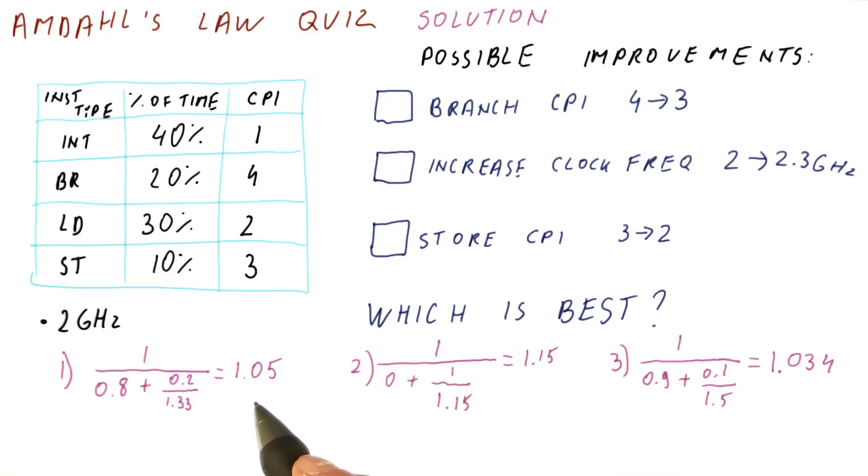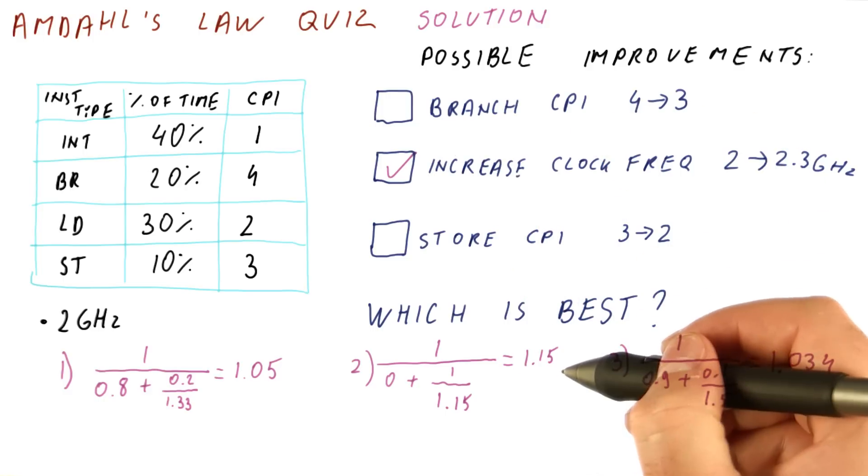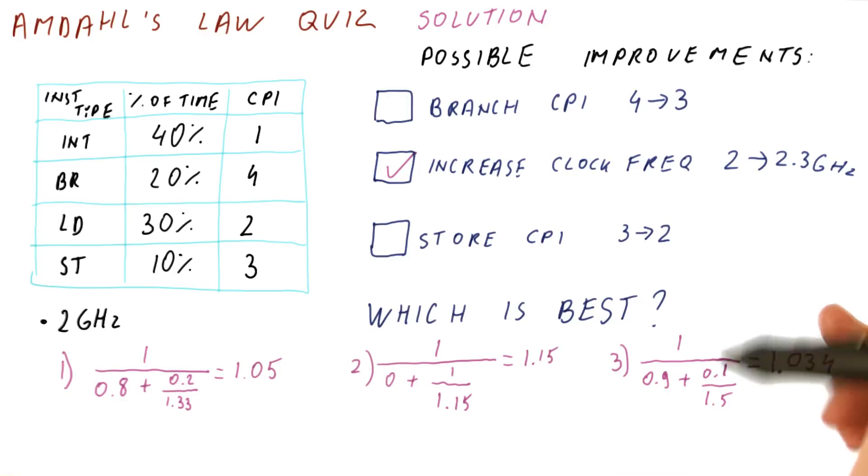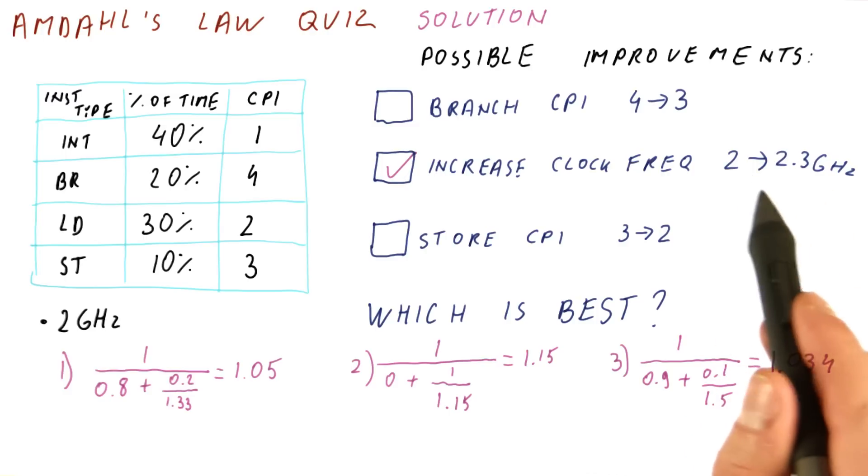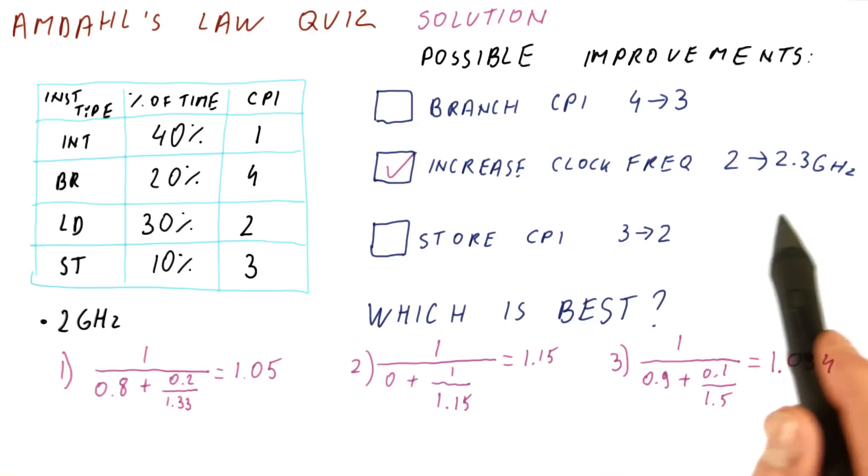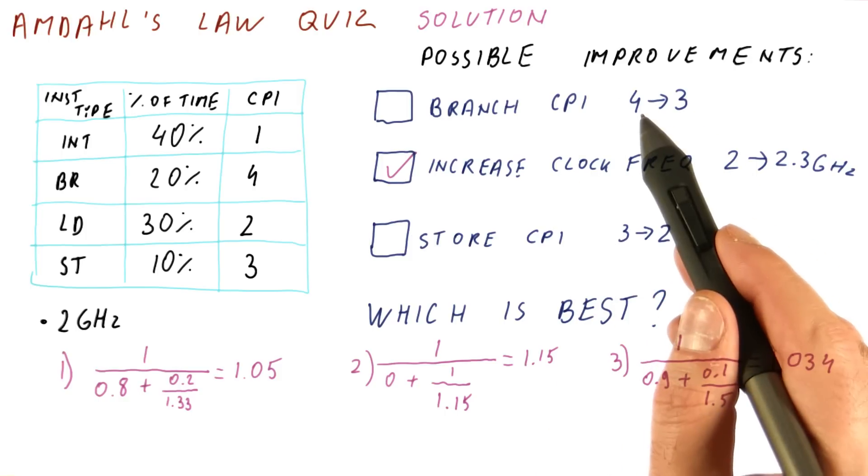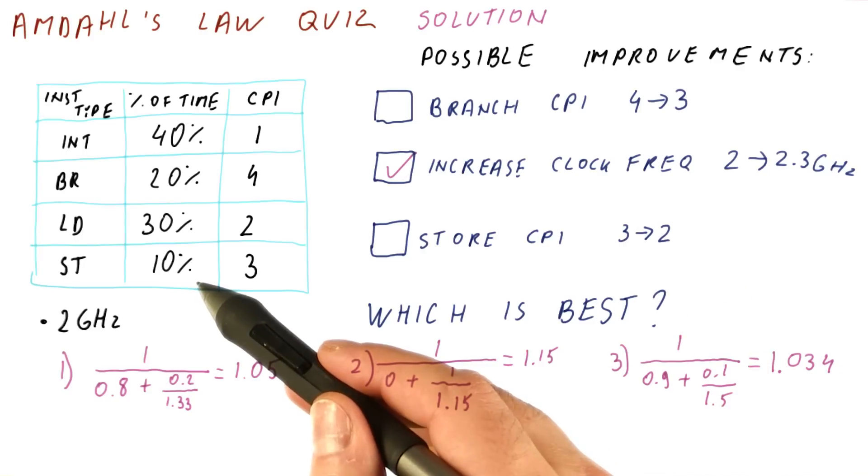So overall, improving the clock frequency gives us a significantly higher improvement than the other two options. Primarily because this is a smaller improvement in terms of speedup on the fraction affected. But the clock frequency increase affects all of the instructions. Versus here, we affect only 20% of the execution time. And here, we are affecting only 10% of the execution time.